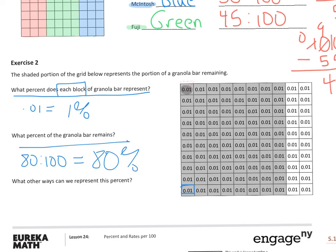And then what other ways can we represent this percent? We can say that 80, I was about to write that a couple of times. Sorry. We can say that 80 percent is the same as 80 to 100, which is the same as 80 over 100,